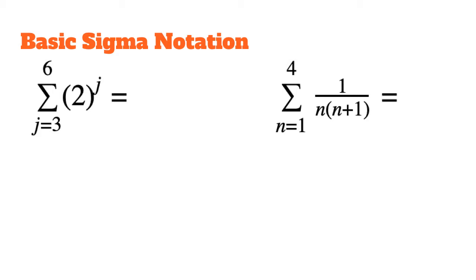Here are some basic sigma notations, and we are going to break them down together. Starting with the one on the left: the bottom part, J equals 3, is our lower limit. That means I am going to start by plugging in the number 3 to get the third term of this sequence — that is going to start my summation. The next thing is the 6, the number I am going to stop at.